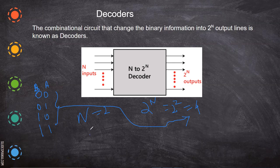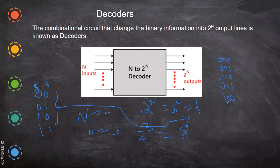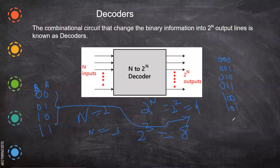Suppose you have n equal to 3. So what will be the output, 2 power 3, which is nothing but 8. Where you have 0, 0, 0, three inputs. So you have all the combinations: 0, 0, 1; 0, 1, 0; 0, 1, 1; 1, 0, 0; 1, 0, 1; 1, 1, 0; and 1, 1, 1. That's 8 combinations.